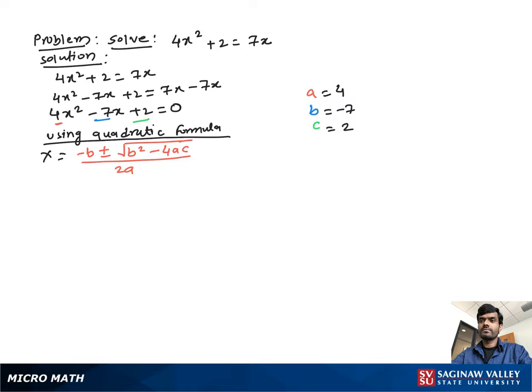Now using quadratic formula: x equal to negative b plus minus square root b square minus 4ac over 2a.